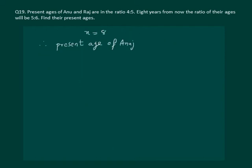But we had assumed present age of Anuj equal to 4x. Let us substitute. We get 4 into 8 equal to 32 years. That means present age of Anuj is 32 years.